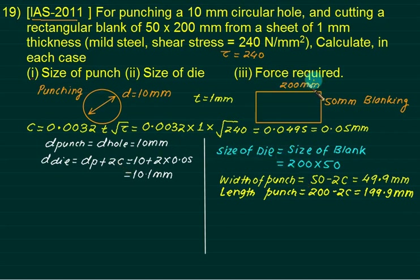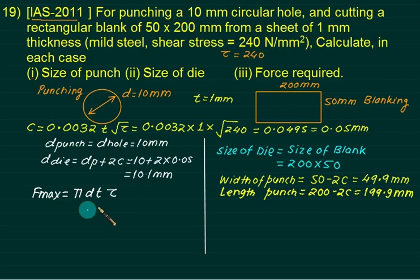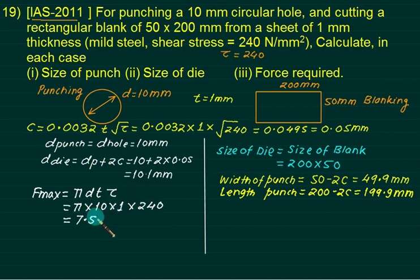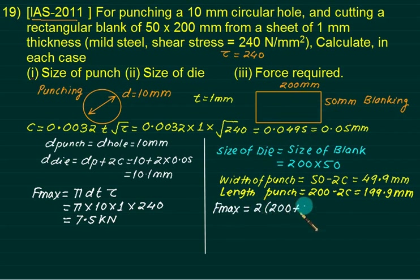The force for punching is F = π×D×t×τ = π×10×1×240 = 7.54 kN. For blanking, F = 2×(200+50)×t×τ = 500×1×240 = 120 kN. These represent the required press capacities for each operation.